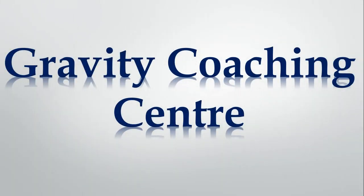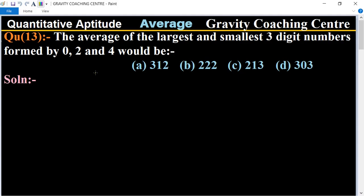Welcome to our channel Gravity Coaching Centre. Quantitative Aptitude, chapter Average, question number 13: The average of the largest and smallest three-digit numbers formed by 0, 2, and 4. First, we write the largest and smallest three-digit numbers.